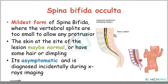Spina Bifida occulta is the mildest form of Spina Bifida, where the vertebral splits are too small to allow any protrusion of the spinal cord or the meninges. The skin at the site of the lesion may be normal or may have some hair or some dimpling. Spina Bifida occulta is usually asymptomatic and is diagnosed incidentally during routine X-ray imaging.